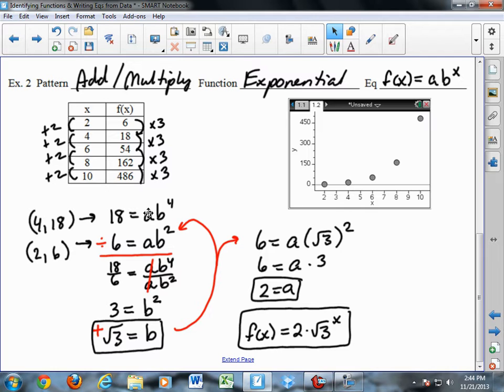Because I want to eliminate a, I can't do that by subtracting because it's multiplied times the b to the power. So I have to divide instead. I'm allowed to divide the first equation by the second because 6 equals a b squared. 6 and a b squared equal each other. They are equivalent to each other. So I am dividing the top equation by the same thing on both sides since 6 and a b squared equal each other.